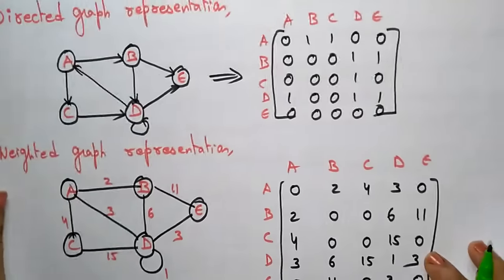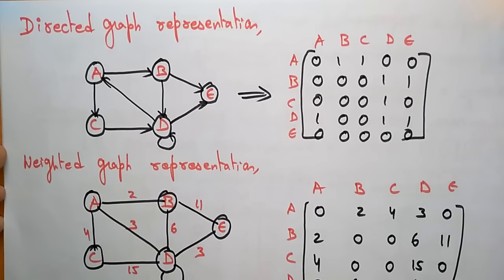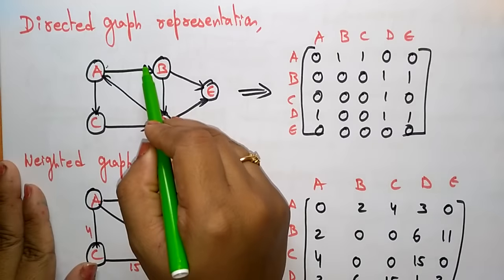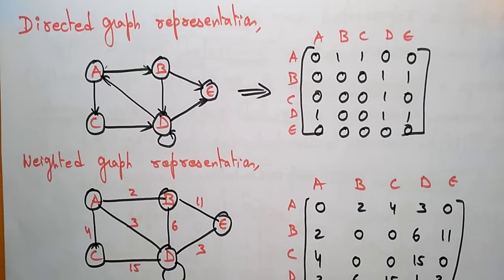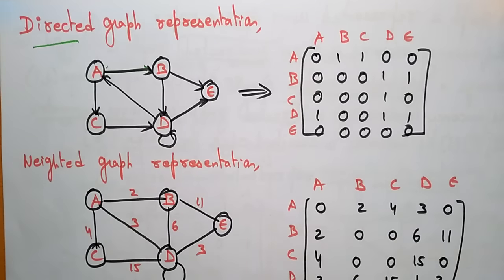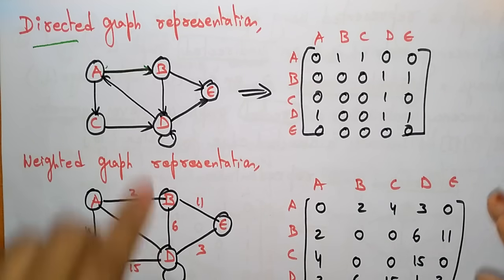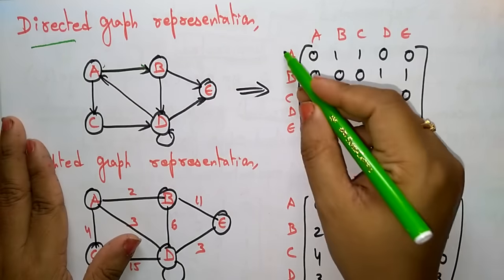Now let me show you the directed graph representation. In a directed graph, direction is given, so you can only go from a to b; b to a is not possible. Only a to b is possible. That is the key point to remember for a directed graph.